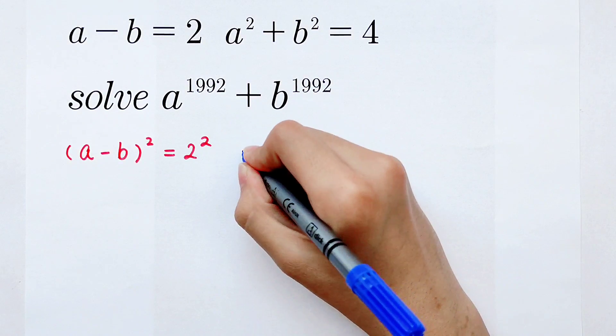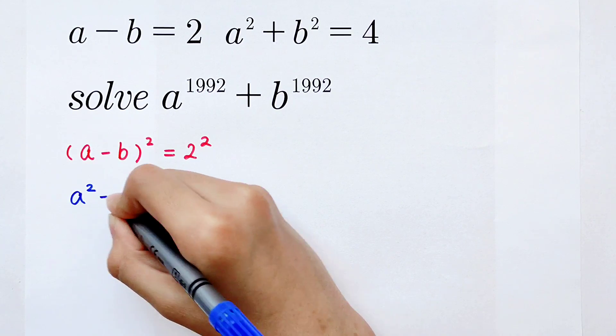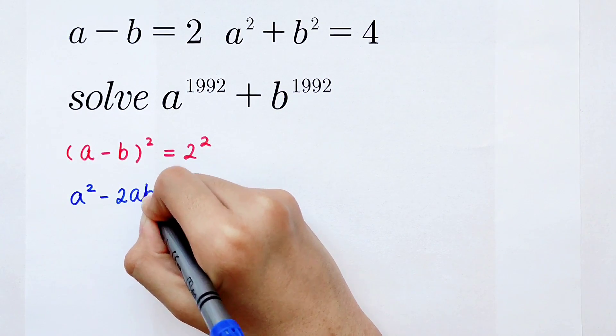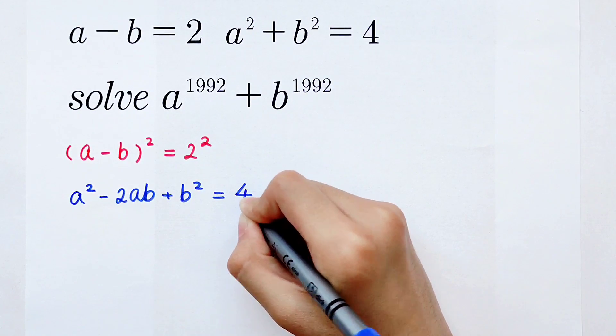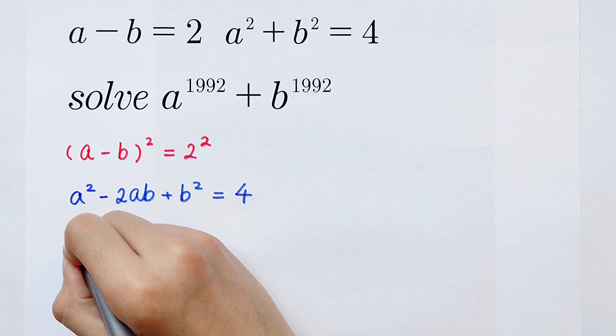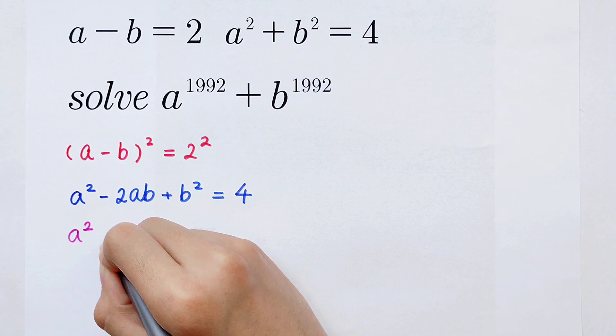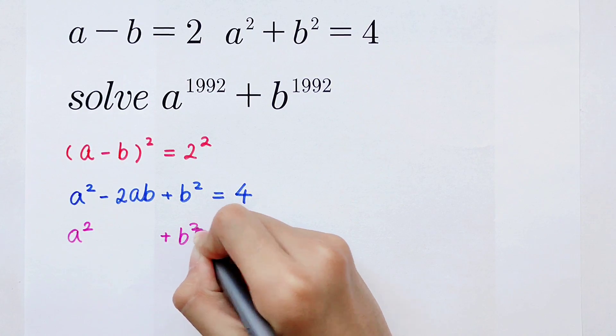This way we can get a² - 2ab + b² = 4. But from the second known condition, we can get a² plus b² is 4.